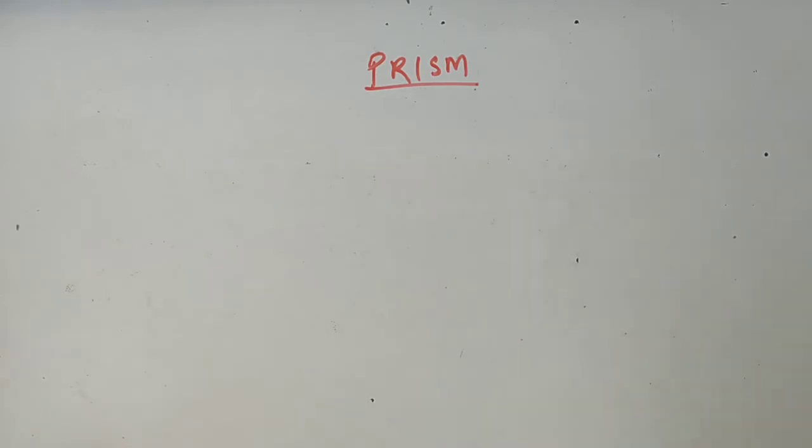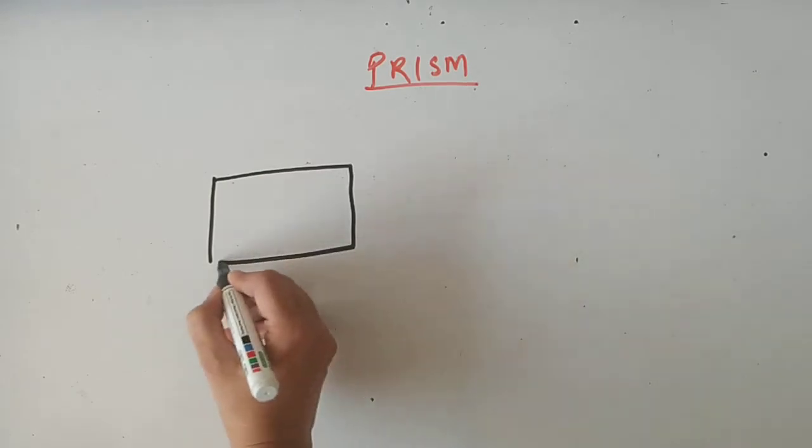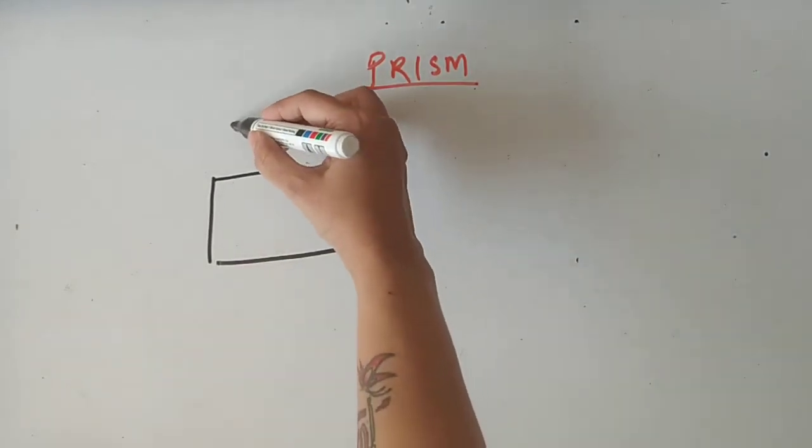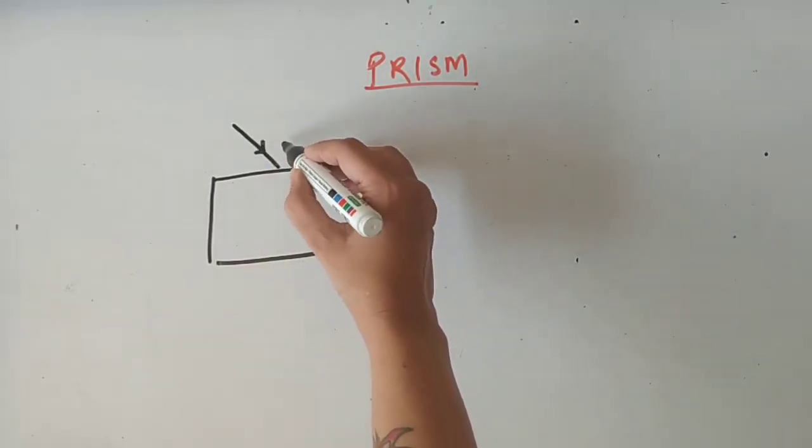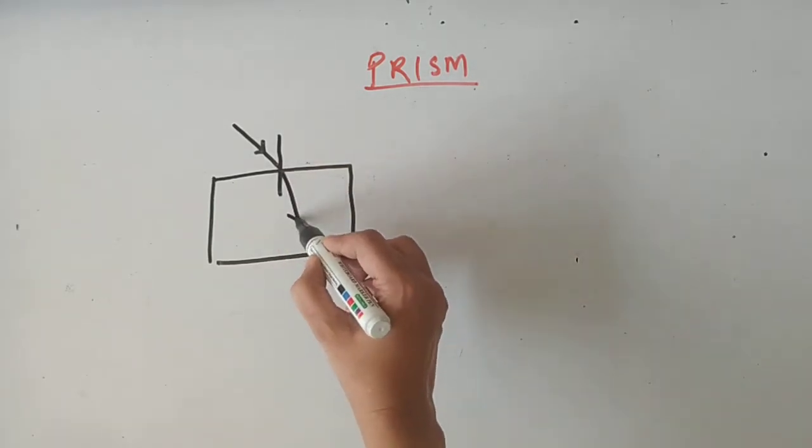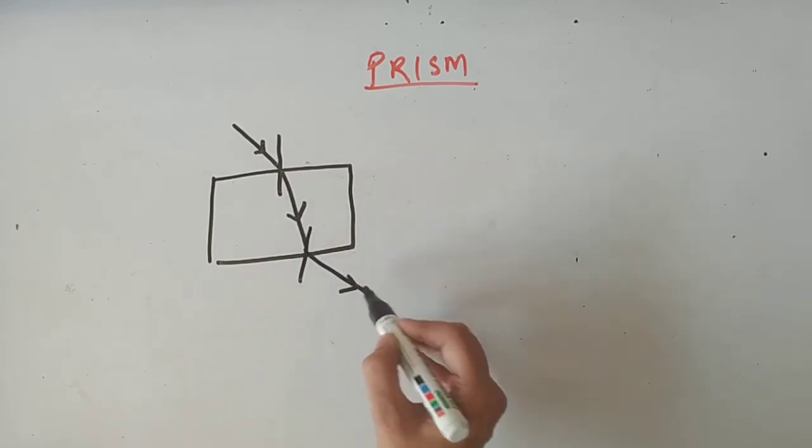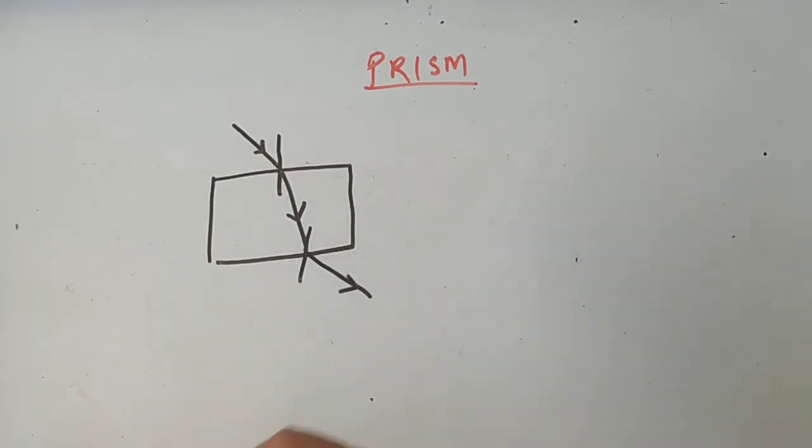In the refraction time, you have seen how light behaves in the glass slab. There's an incident ray and its normal. The refracted ray bends towards the normal, then again bends away from the normal, and this is the emergent ray.